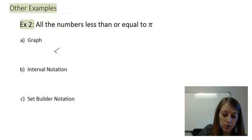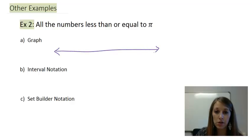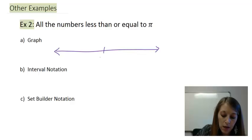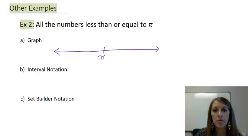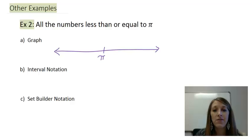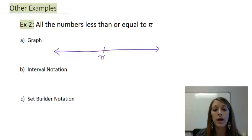The first thing we're going to do is graph it — again, a visual helps with the other two parts. The only number I'm going to put on my number line is pi. That's the symbol for 3.14..., but again it doesn't matter — all I care about is the way it's notated.